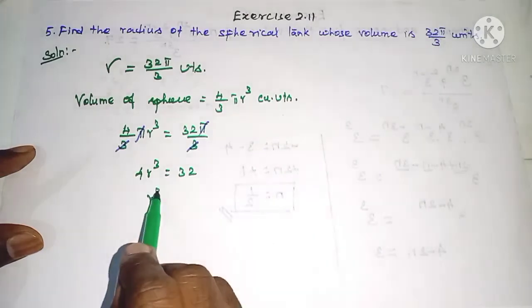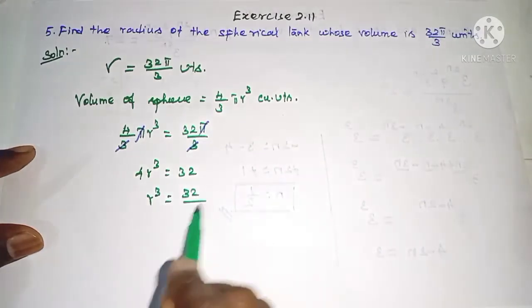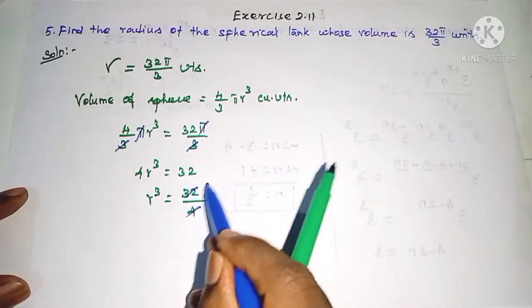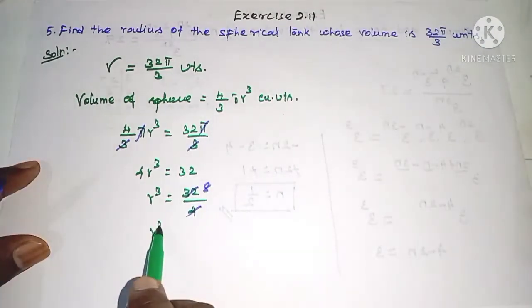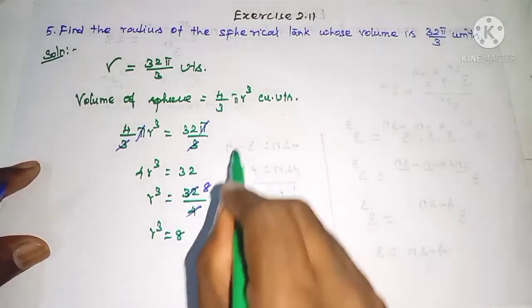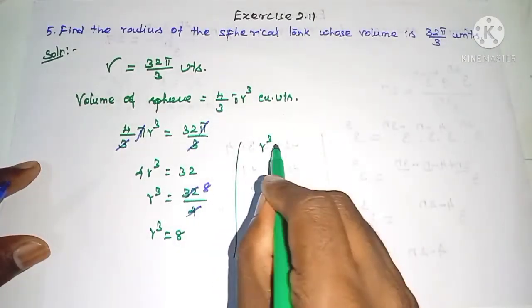So r³ is equal to 32 divided by 4. If we cancel it, we will get 8. So r³ is equal to 8, which means r³ is equal to 2³.